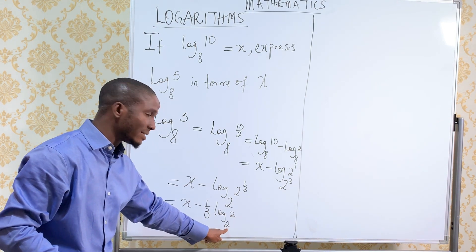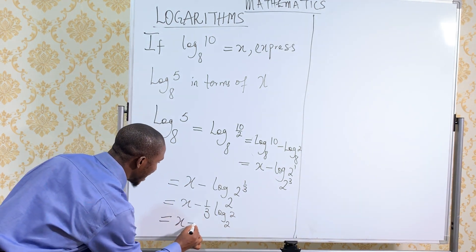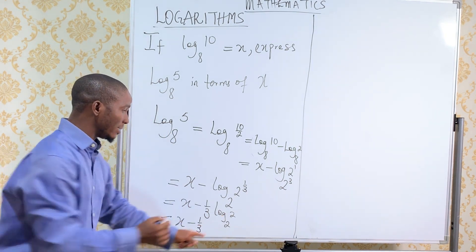Log 2 base 2 will give us 1. Anytime the log and base are the same, it becomes 1. So we now have it to be x minus 1 over 3 times 1. This is already 1.